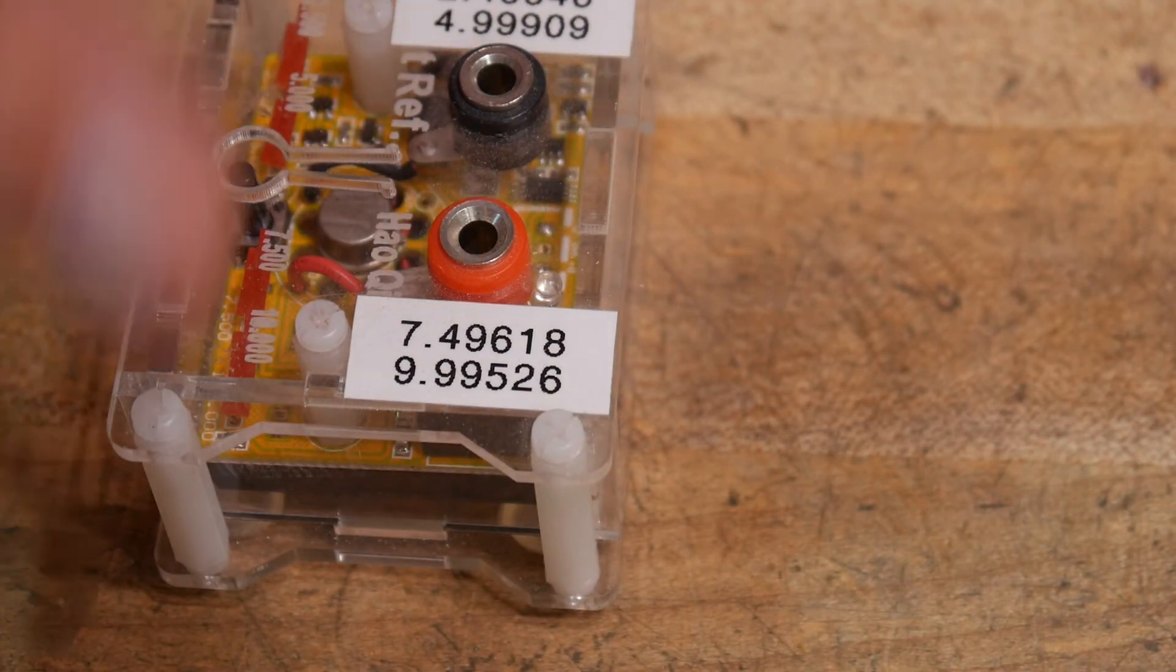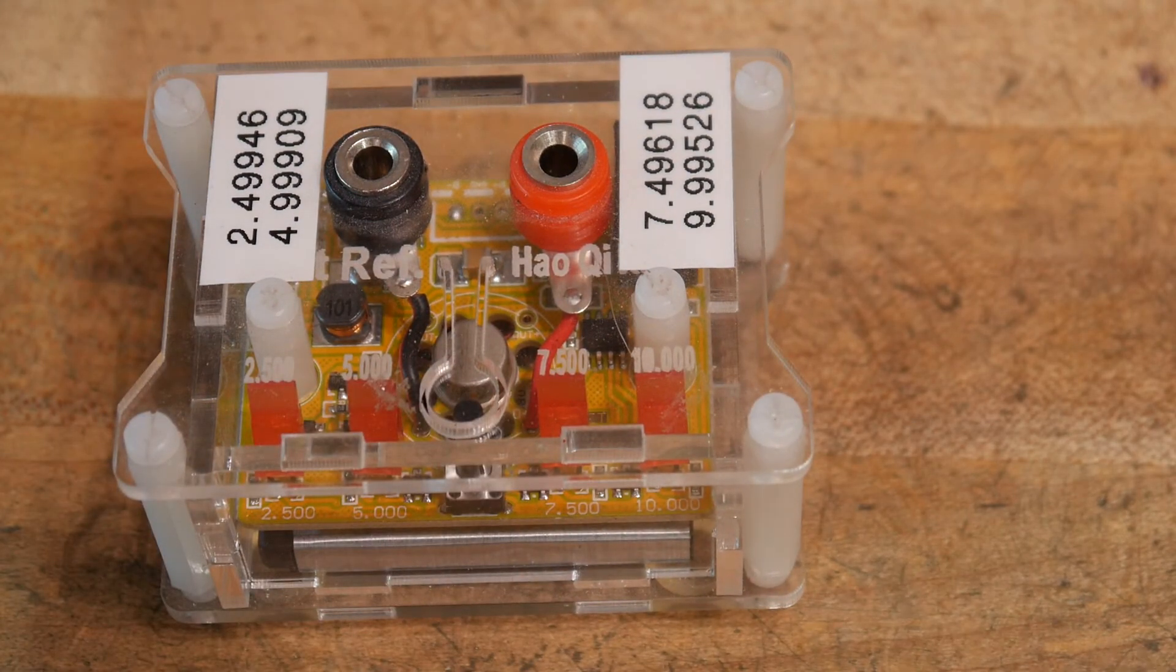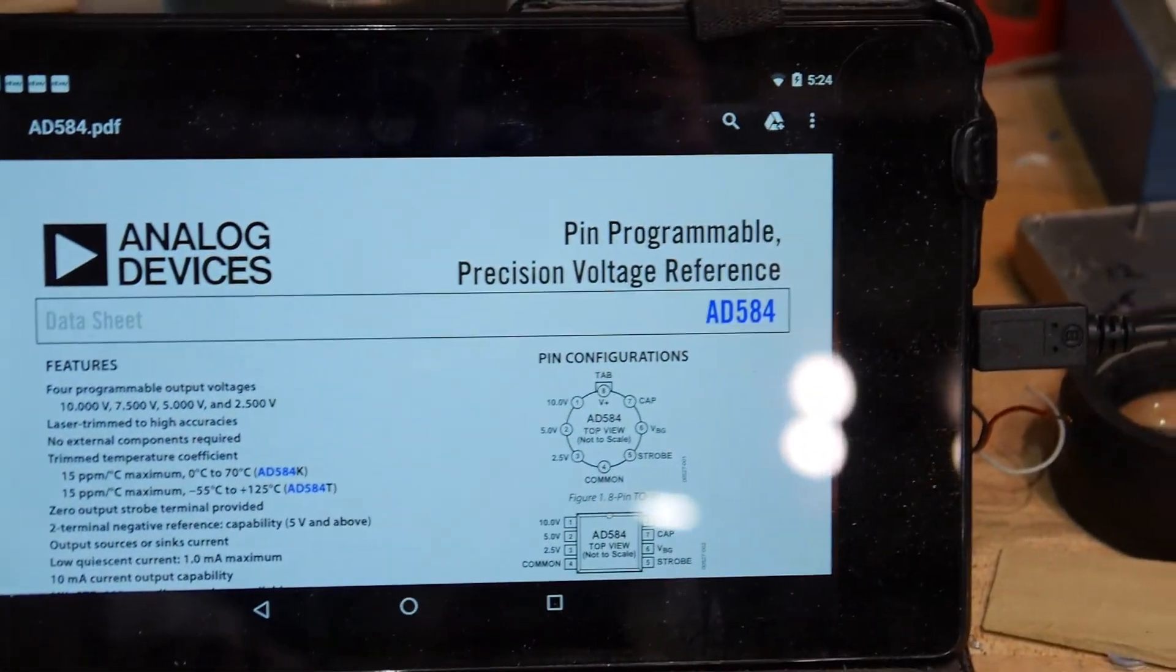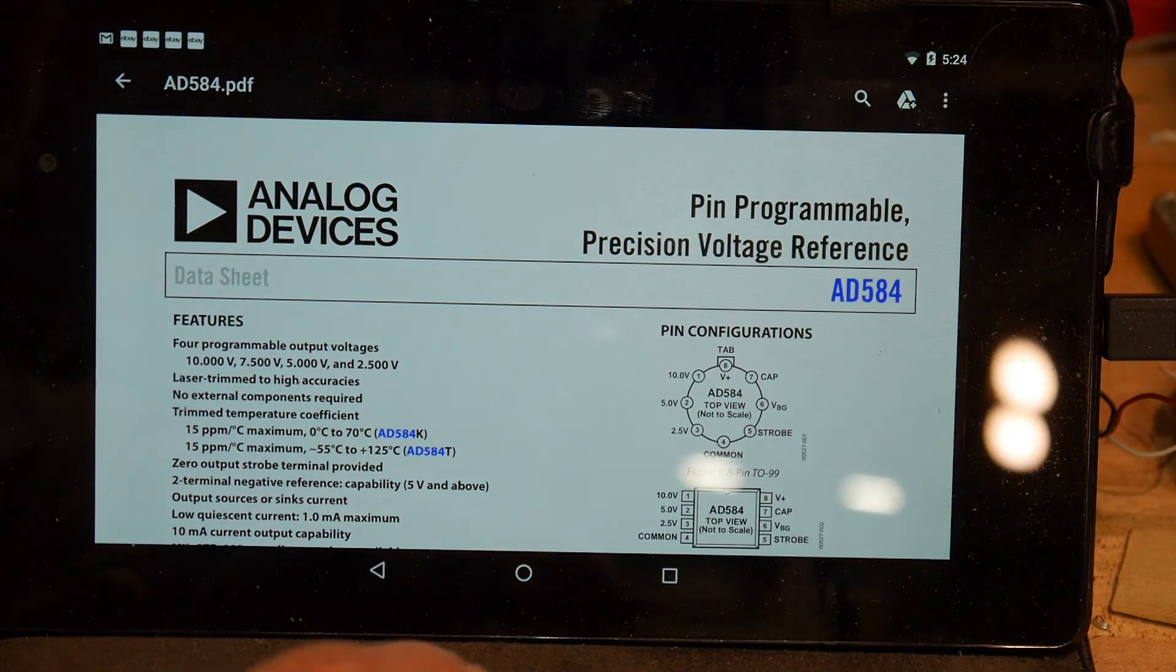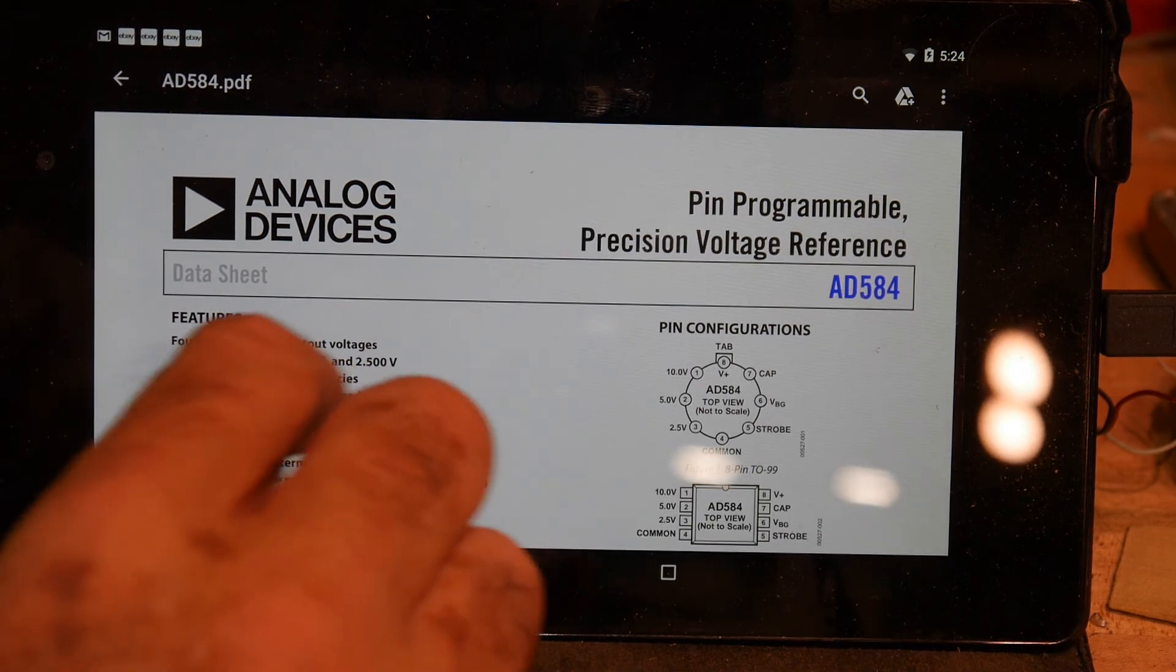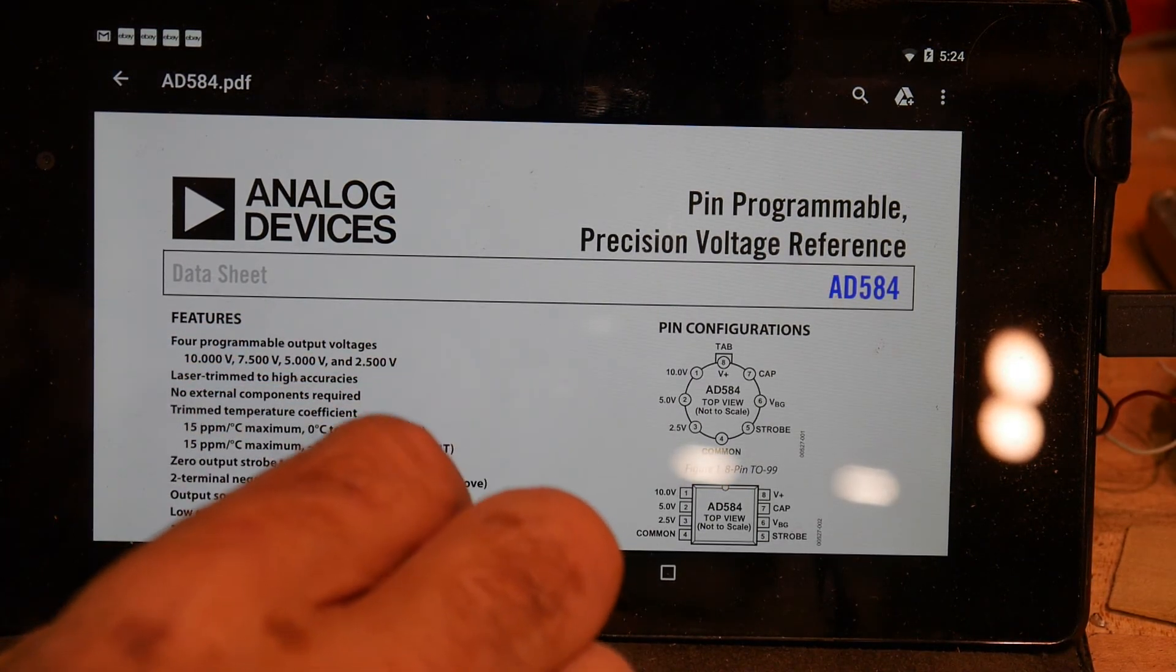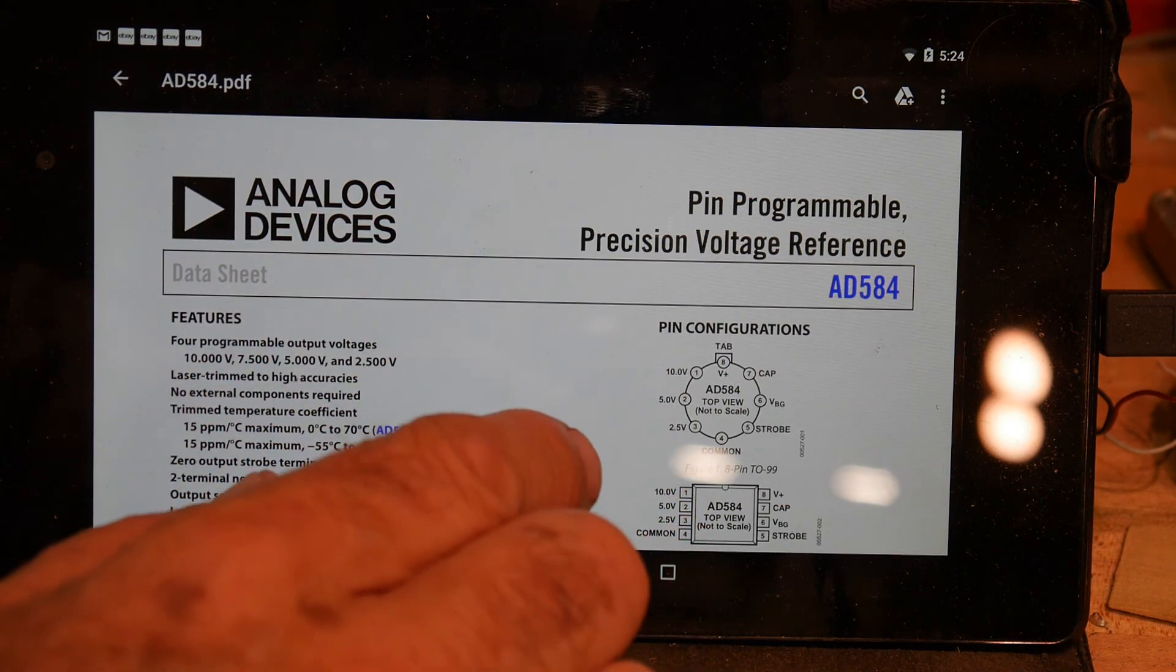So let's go ahead and take a look at the datasheet for the chip that's used inside this thing. It is a AD584, and it is a laser-trimmed part. And it outputs multiple voltages.